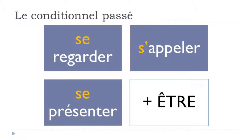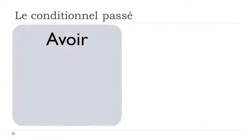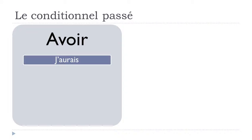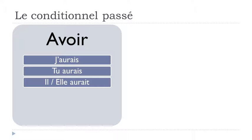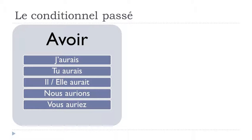So se regarder, s'appeler, se présenter — all reflexive verbs require être at the conditionnel passé. Now let's see how avoir and être are conjugated at the conditionnel présent, since that's the first part you need. For avoir: j'aurais, tu aurais, il aurait, elle aurait, nous aurions, vous auriez, ils auraient, elles auraient.